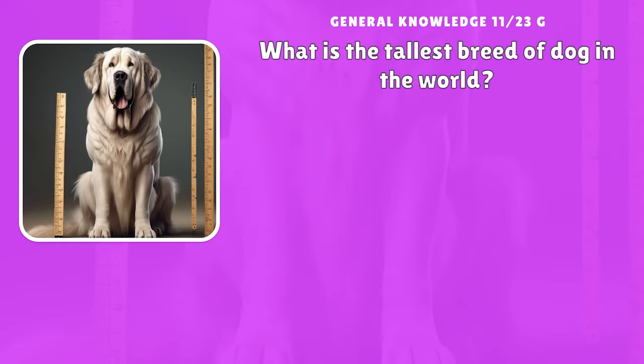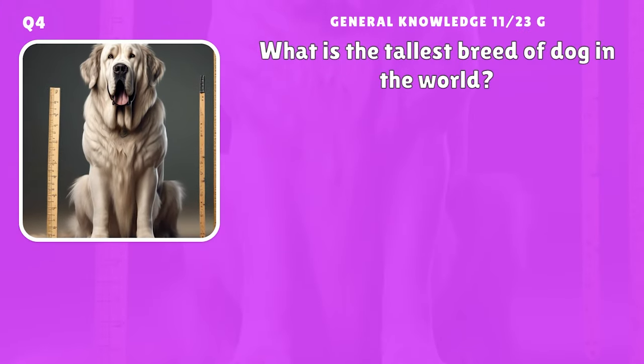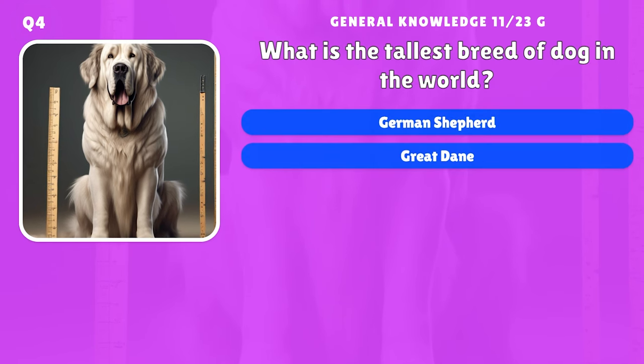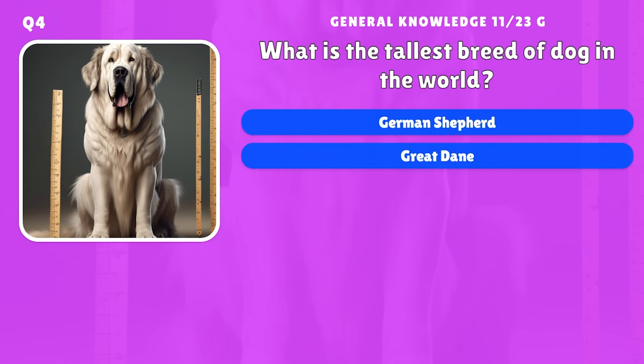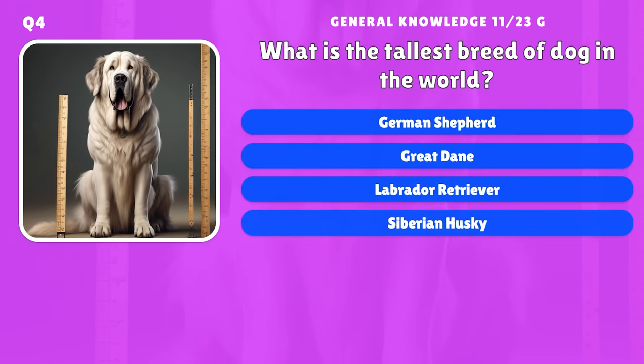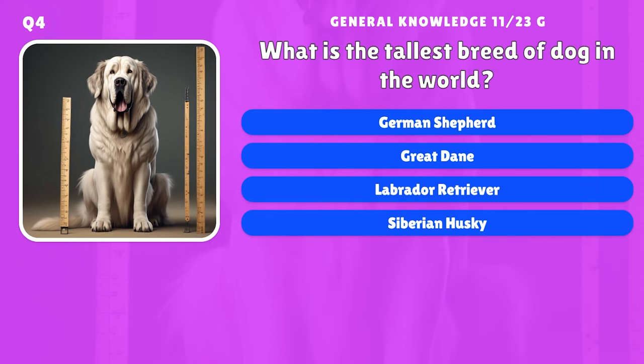What is the tallest breed of dog in the world? A) German Shepherd, B) Great Dane, C) Labrador Retriever, D) Siberian Husky.